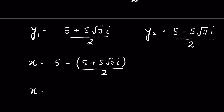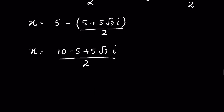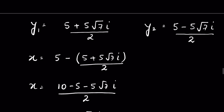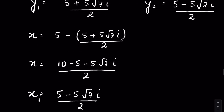And x is equal to 10 minus (5 plus 5 times the square root of 7i) over 2, which gives x equals 5 minus 5 times the square root of 7i, over 2. So when y is (5 plus 5 times the square root of 7i) over 2, x is (5 minus 5 times the square root of 7i) over 2.